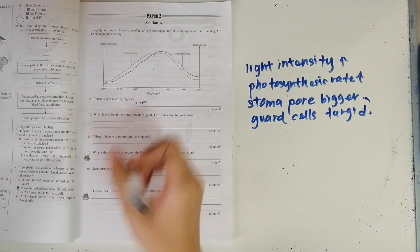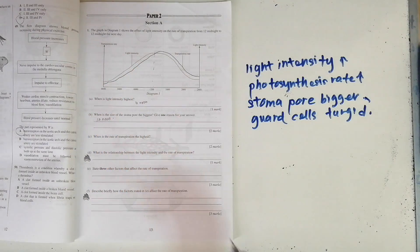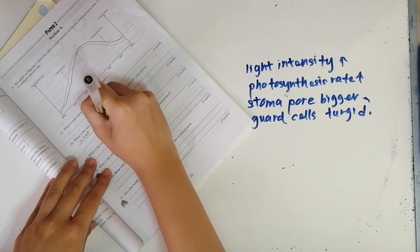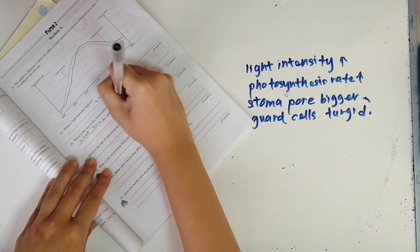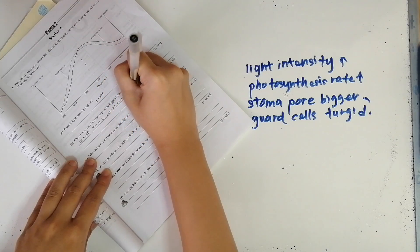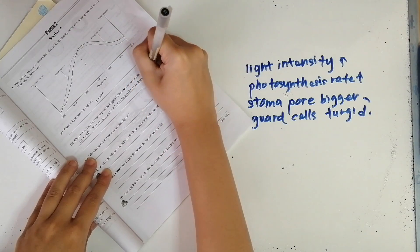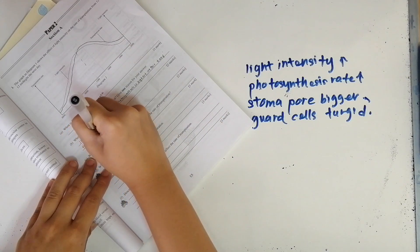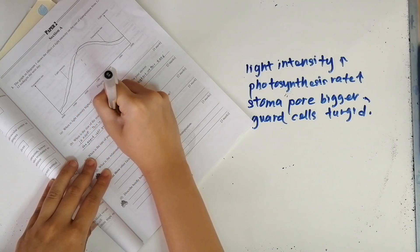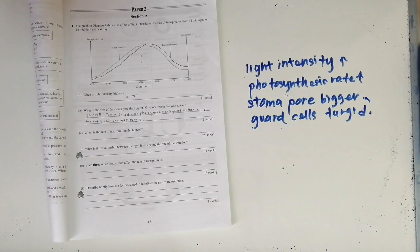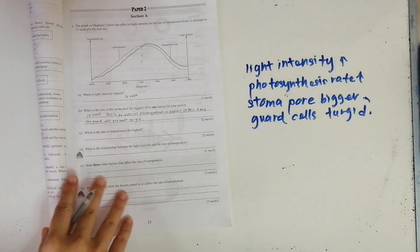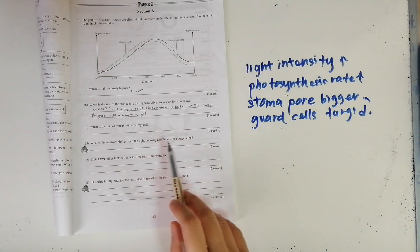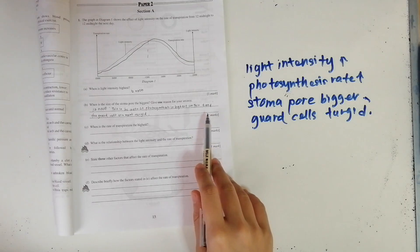So to answer this question, it'll be at 12 noon, because the rate of photosynthesis is highest at this time and the guard cells are the most turgid.